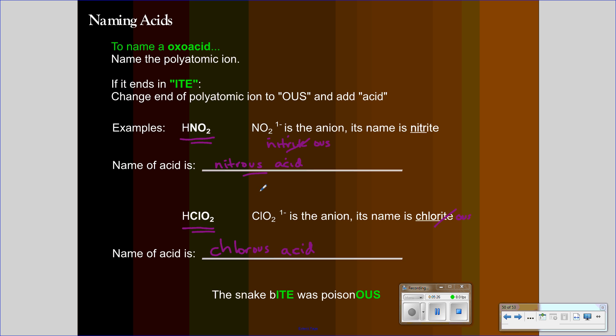Again, whenever you have an oxoacid, we do not use the prefix hydro at all. We simply go straight to that root. We change A-T-E to I-C or I-T-E to O-U-S and then add the word acid. And that's it. And then the mnemonic for this one will be, the snake bite was poisonous.